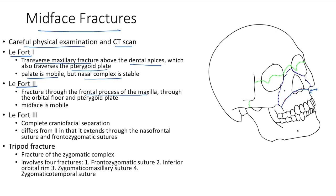LeFort type 2 is a fracture through the frontal process of the maxilla, through the orbital floor and pterygoid plate. The entire mid-face is mobile in this case.